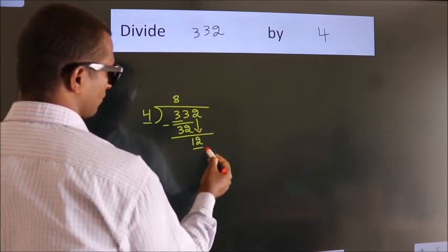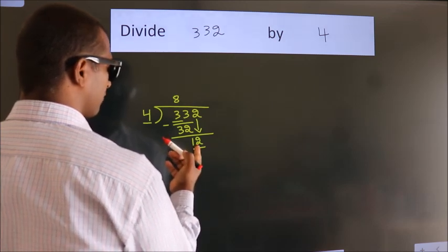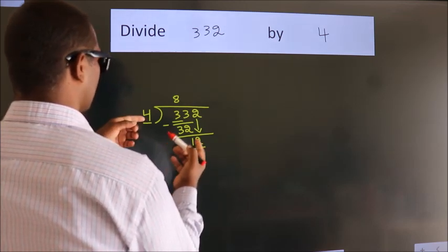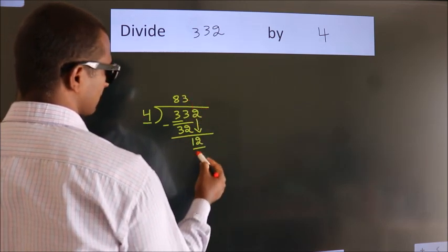So, 2 down. So, 12. When do we get 12? In the 4 table, 4 times 3 is 12.